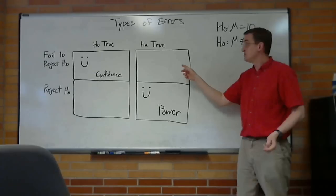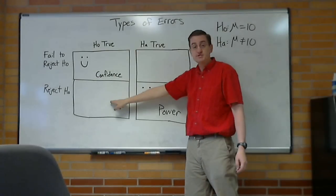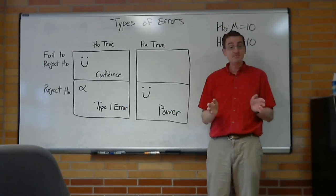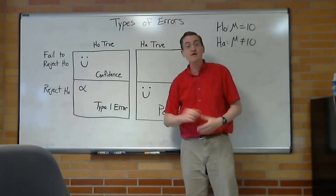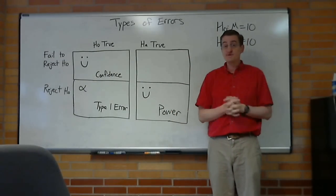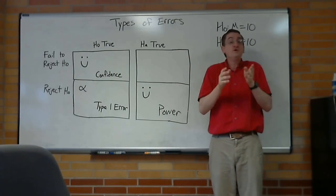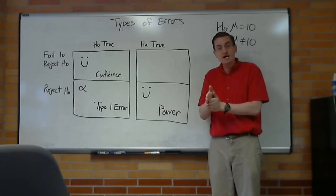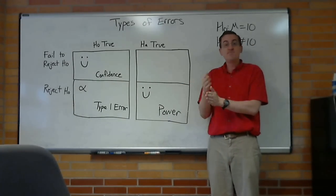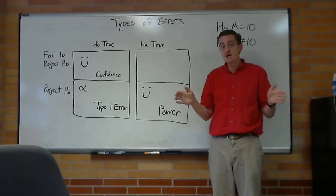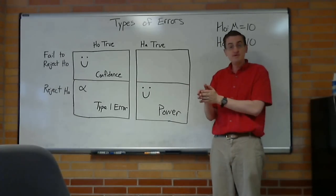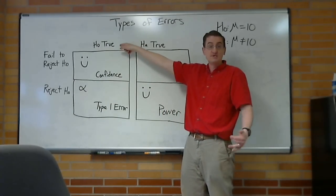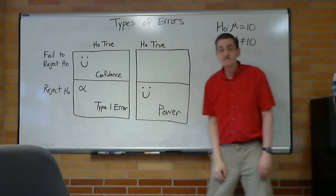Now the other two scenarios are not good. Here the null was true, but we rejected it. That's called a type one error. How often the type one error happens, we use the Greek letter alpha to represent that. And we've been seeing alpha a little bit so far. When we talk about that alpha, we were basing what we did on the null hypothesis, and then we were making a line calling it alpha and saying beyond this we're going to reject. Well, since it was based on the null hypothesis, it has probability of alpha of rejecting even when the null was true, because the math was based on the null being true. So that is a type one error.